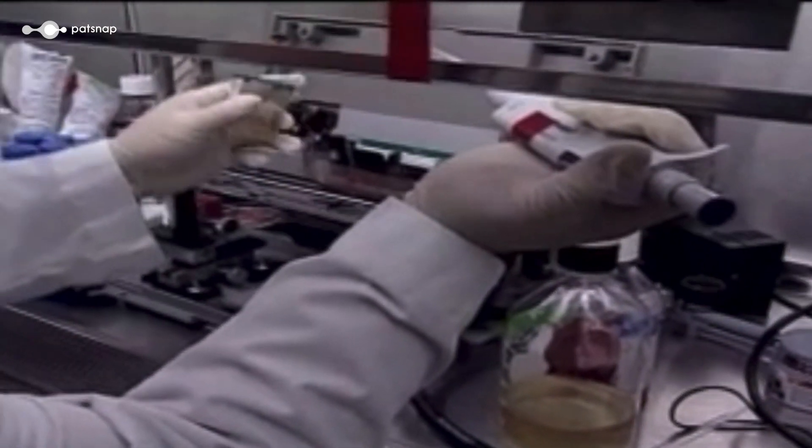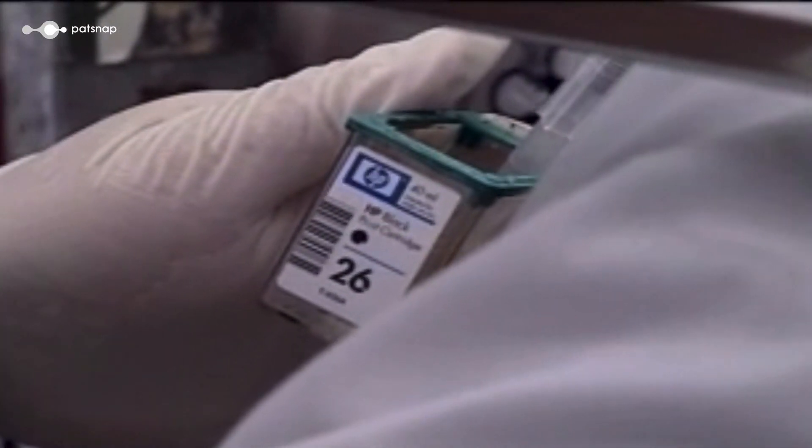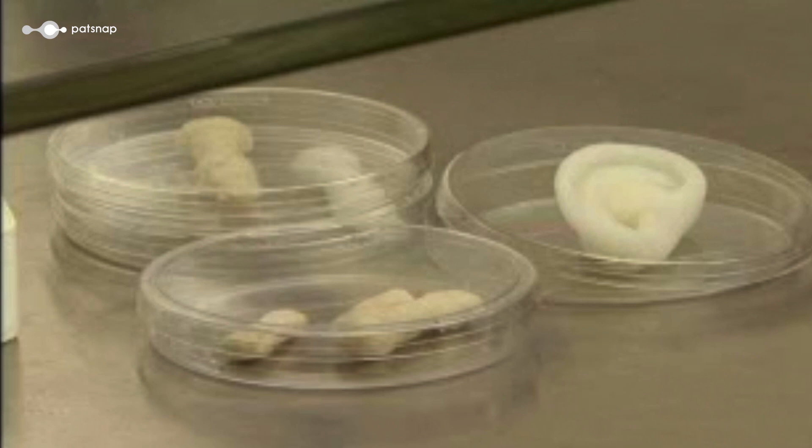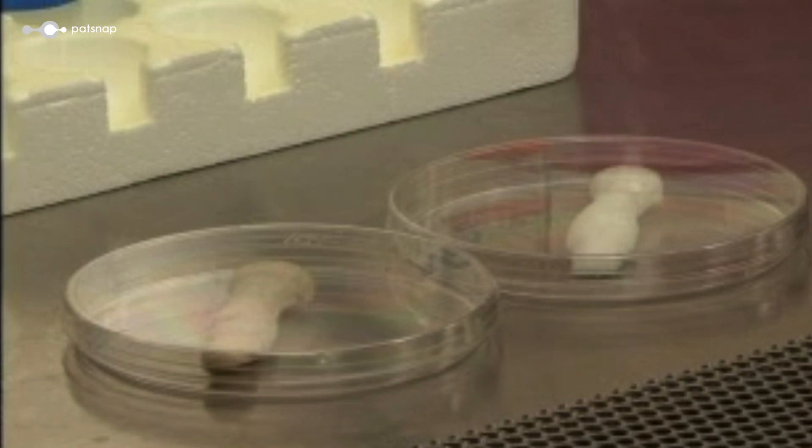By the 1990s, scientists had been experimenting with the use of inkjet printers to build living cells. By modifying the ink cartridges to contain cells and bioink, researchers were able to deposit those cells onto various substrates, marking the very first beginnings of bioprinting.